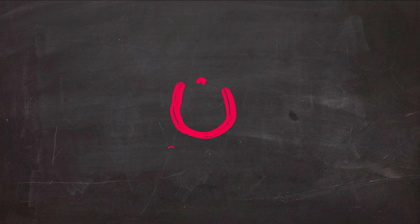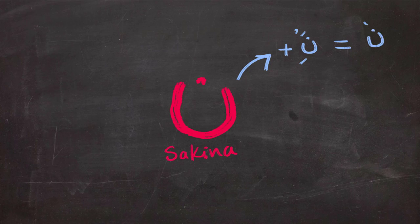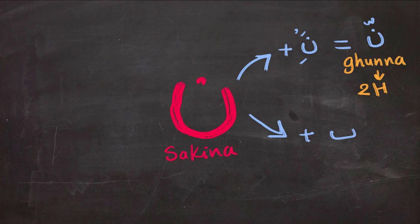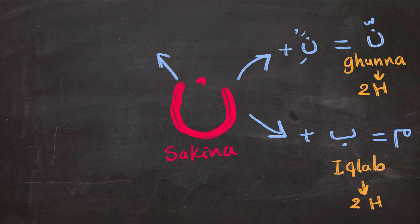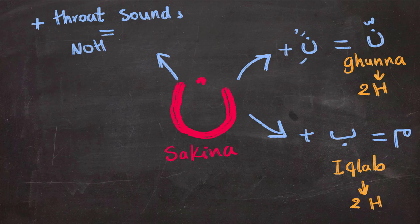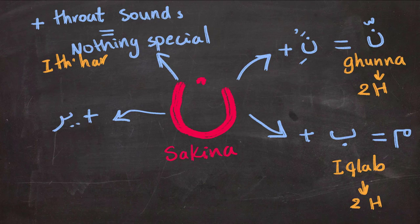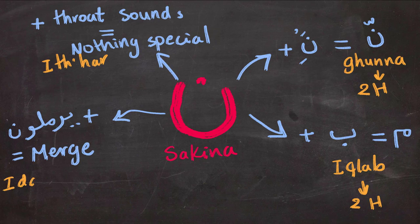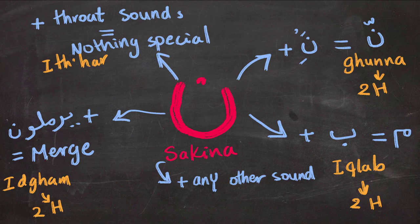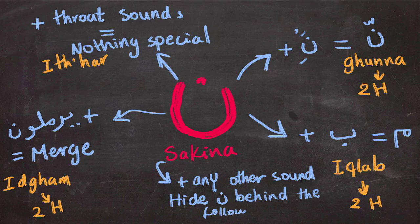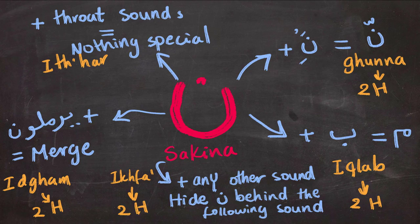In a nutshell: noon sakinah plus another noon with a vowel gives you a shaddah — noon with shaddah — and a ghunnah for two harakat. Noon sakinah plus Ba gives you Mim with two harakat. Noon sakinah plus any throat sound — nothing happens, you pronounce the Nun normally. Noon sakinah plus any of the yarmaloon sounds — you merge it for two harakat. And noon sakinah plus any of the 15 ikhfa sounds — you hide the Nun by shaping for the next sound while keeping the nasal sound.